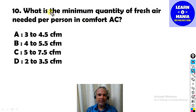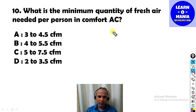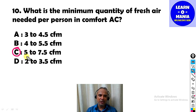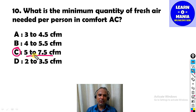Our next MCQ: What is the minimum quantity of fresh air needed per person in comfort air conditioning? The correct option is C — per person, 5 to 7.5 CFM (cubic feet per minute) of fresh air is required.